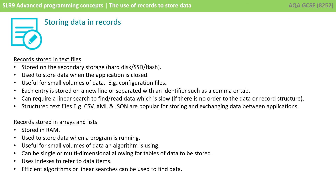Let's recap what we've gone over in this video. First, records stored in simple text files: we store the data on secondary storage, for example a hard disk, and it's used to store the data permanently when the application is closed. This is useful for small volumes of data, like game configuration files. Each entry in the text file is stored on a new line or separated with some kind of identifier like a comma or a tab. It can require a linear search to find the data, which is slow. It's useful for structured text files like CSV.